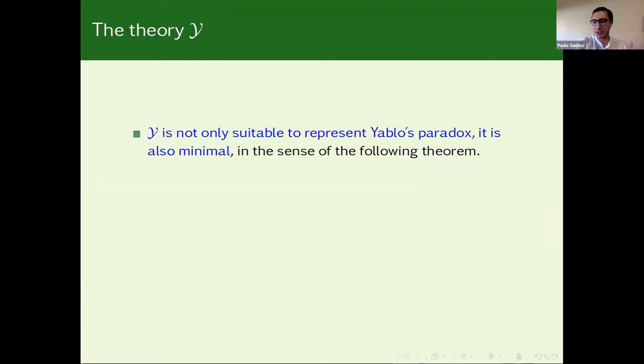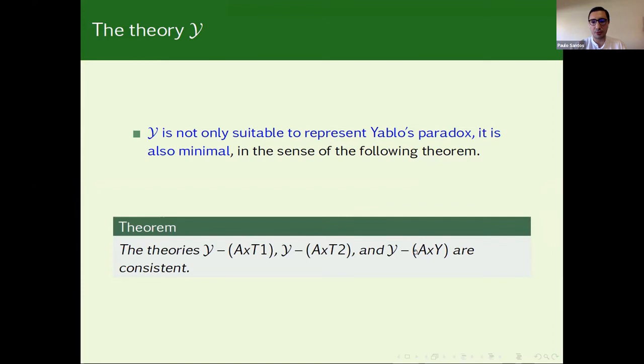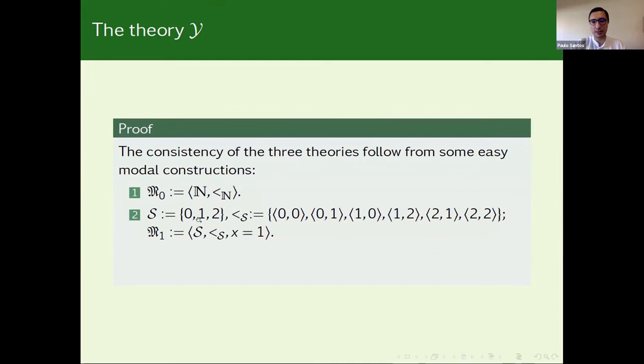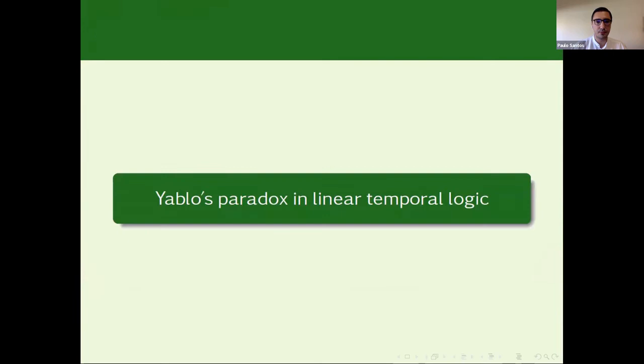But this theory Y is not only suitable to represent Yablo's paradox, because we started from a consistent theory and we then had an inconsistent theory. But it is also minimal in the following sense. If one removes one of the axioms of the theory Y, we start to have a consistent theory. In other words, theory Y minus the first axiom, the second or third, gives rise to a consistent theory. We prove this simply by showing the model. The first one is rather simple to give the model, simply the usual model for the smaller relation. The second one needs at least this kind of construction for the model. And the last one needs to invert the interpretation. But I do not want to enter in much detail here. This is just to show you the models and they are not really complex as you can see.